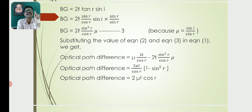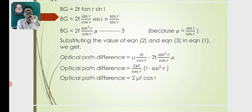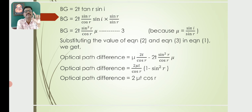Substituting equations (2) and (3) into equation (1), the optical path difference = μ × (2T / cos R) − 2T sin²R / cos R = (2μT cos R)(1 − sin²R) / cos²R. Since 1 − sin²R = cos²R, this simplifies to: optical path difference = 2μT cos R.